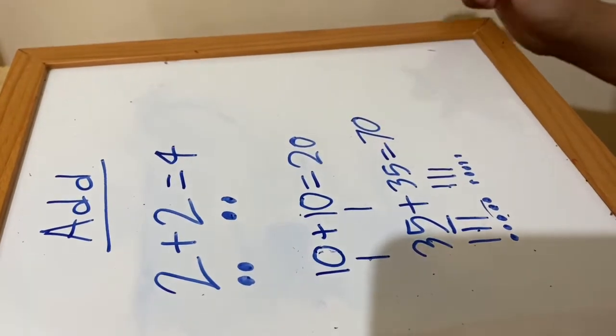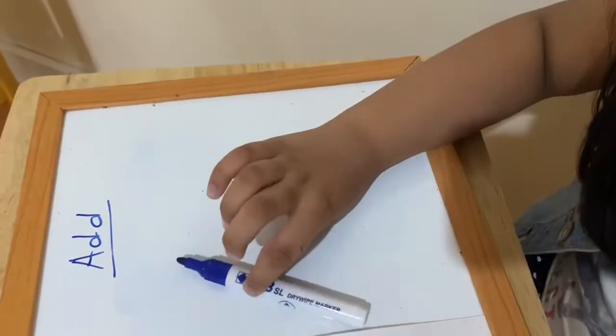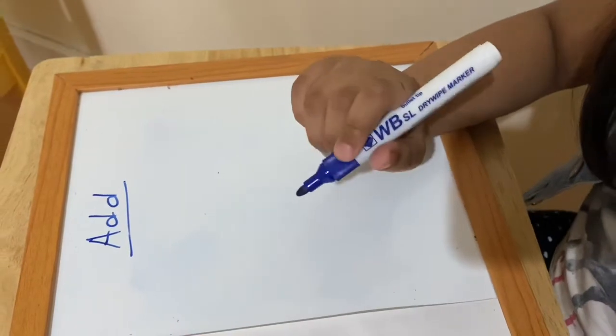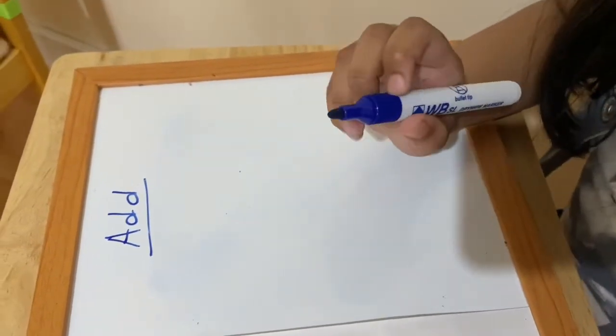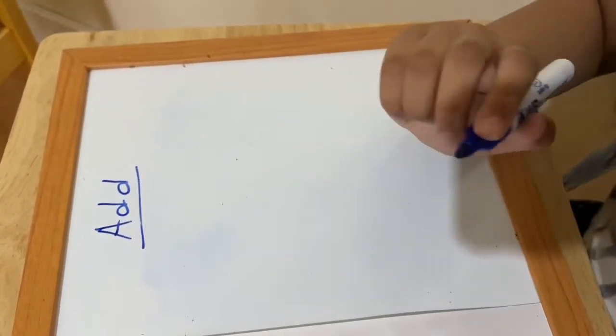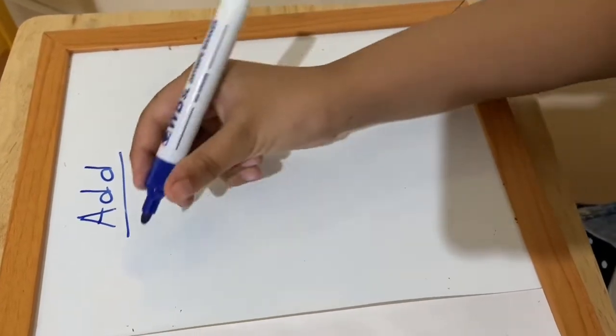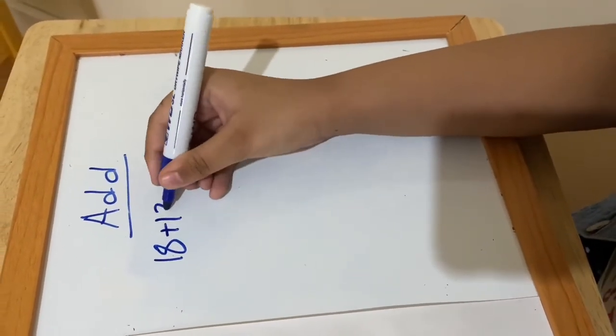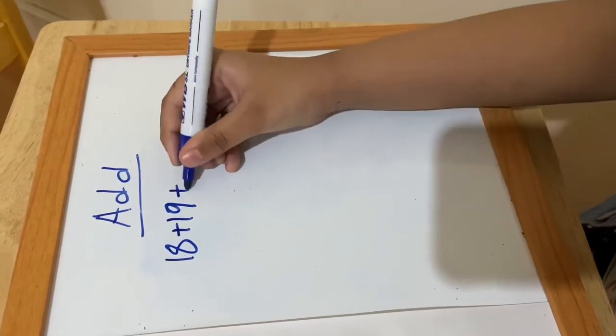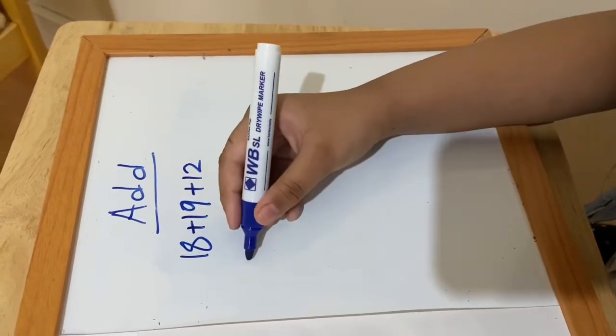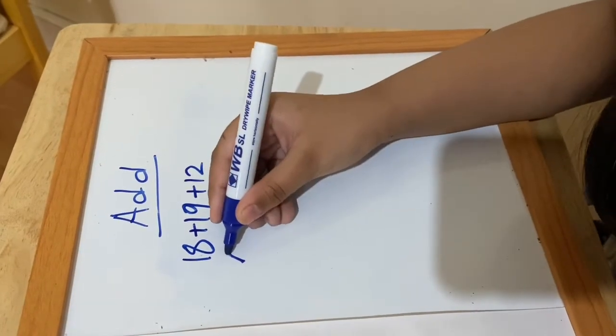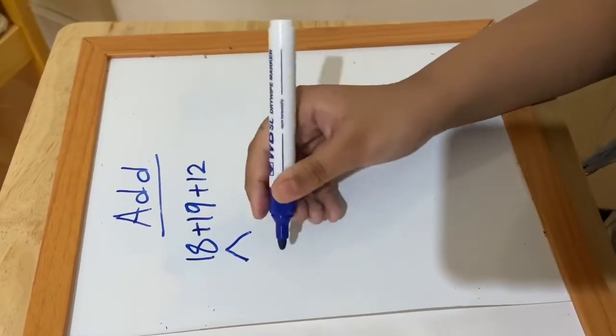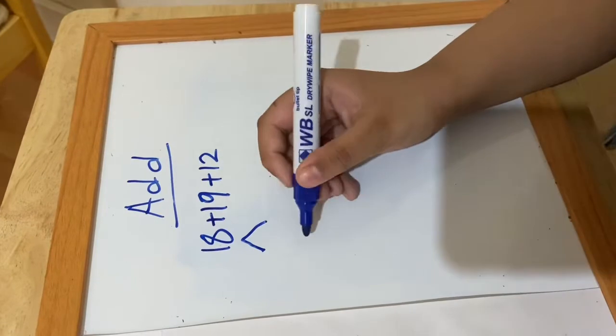And that is another example. Number sentences are going to be a tiny bit harder because there's going to be three numbers in one number sentence, for example 18 plus 19 plus 12. And what you have to do is break them up, for example like this, look.